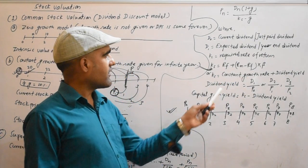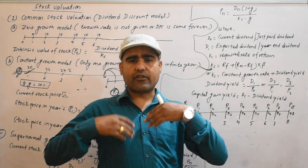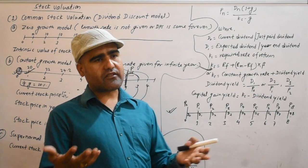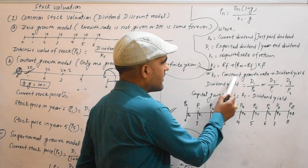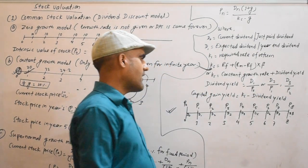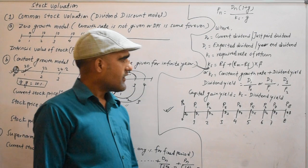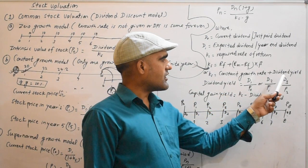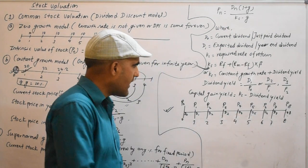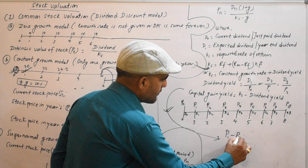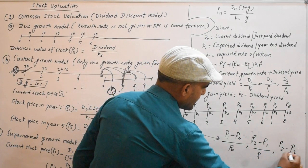This is a systematic risk measure tool. This is KS. This is the constant growth rate. This is the dividend yield. The dividend yield in year 1 is D1 divided by P0. Year 2 is D2 divided by P1. Year 3 is D3 divided by P2. The capital gain yield is KS minus dividend yield, or P1 minus P0 divided by P0, then P2 minus P1 divided by P1, then P3 minus P2 divided by P2.